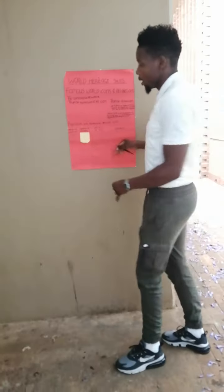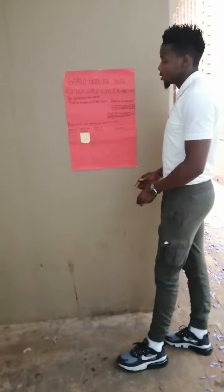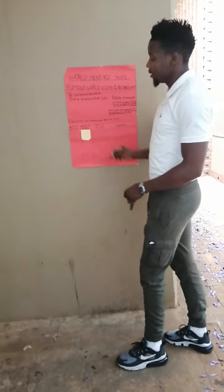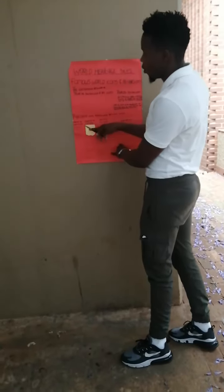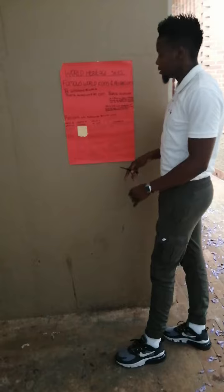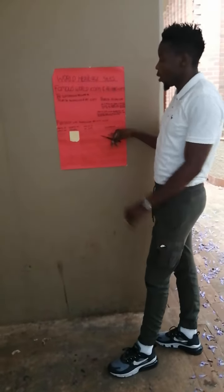On this one, we expect learners to participate. They either give the name of an icon or the name of a country. As a teacher, we are going to give a description of an icon, then they give the name of the country.